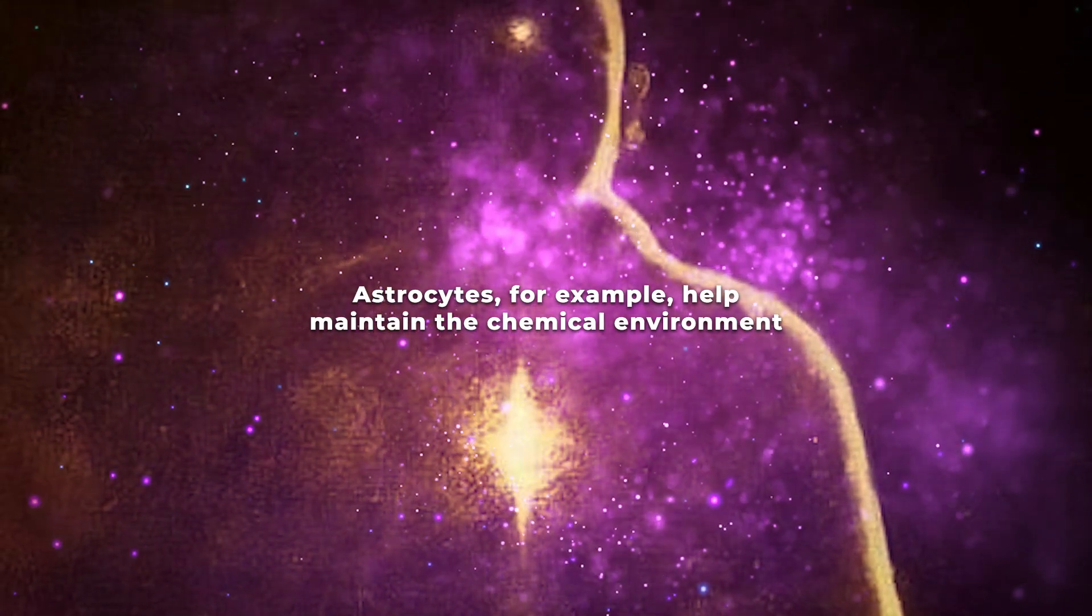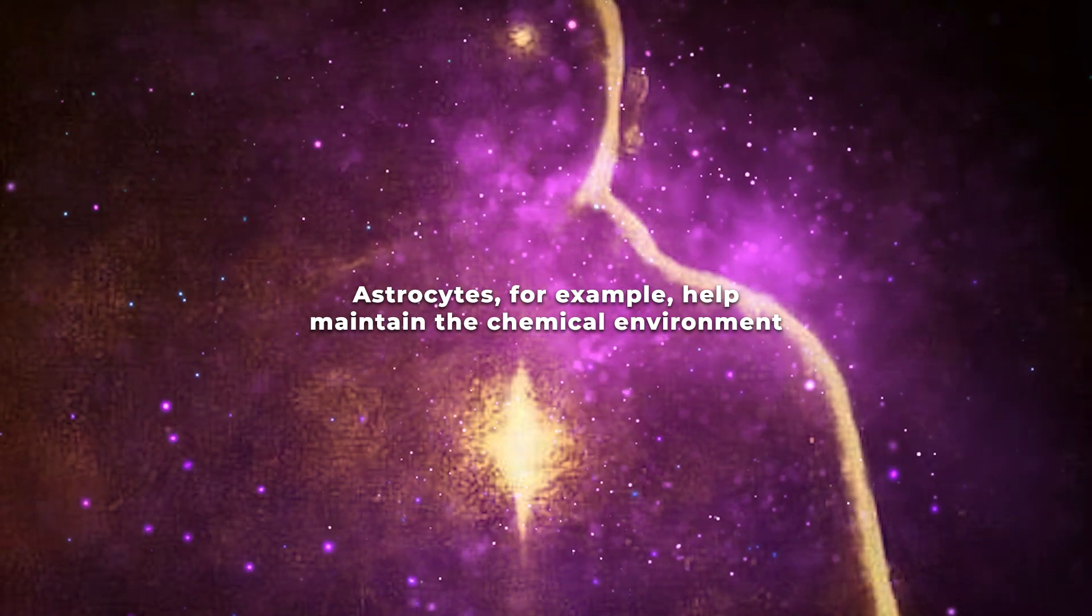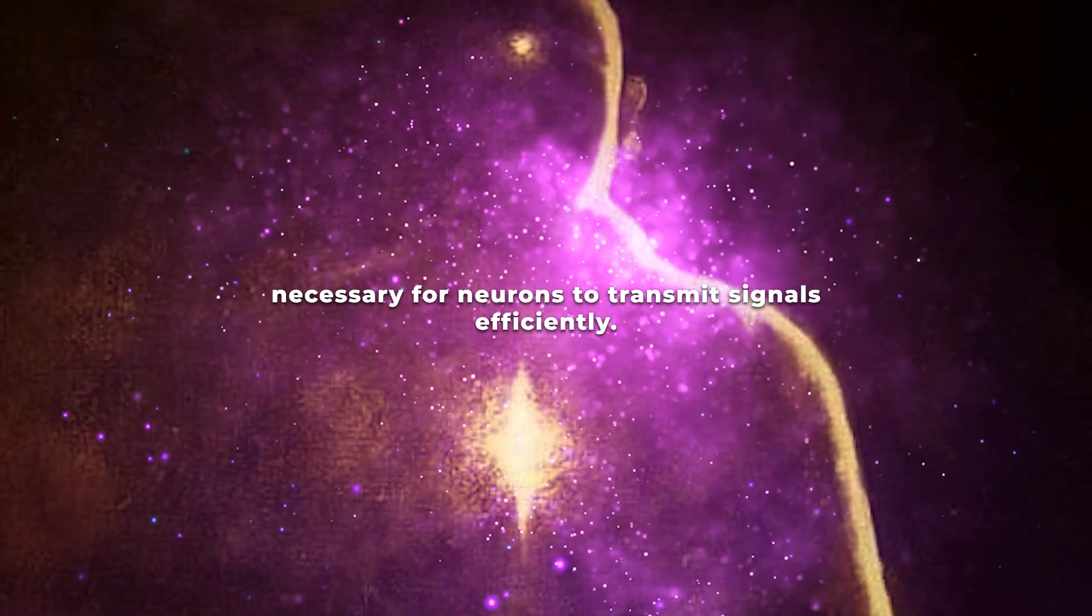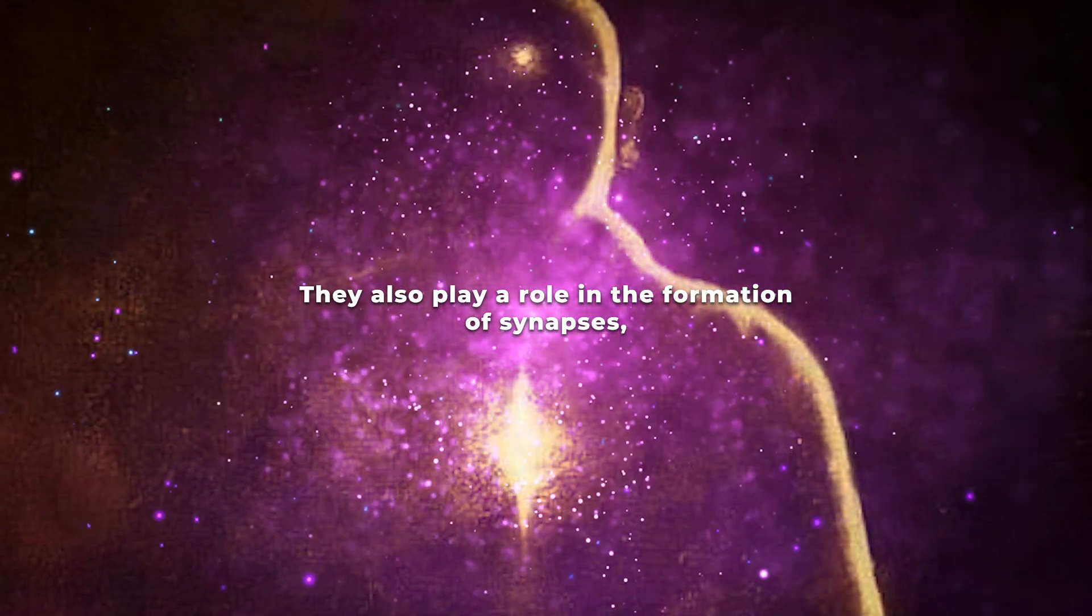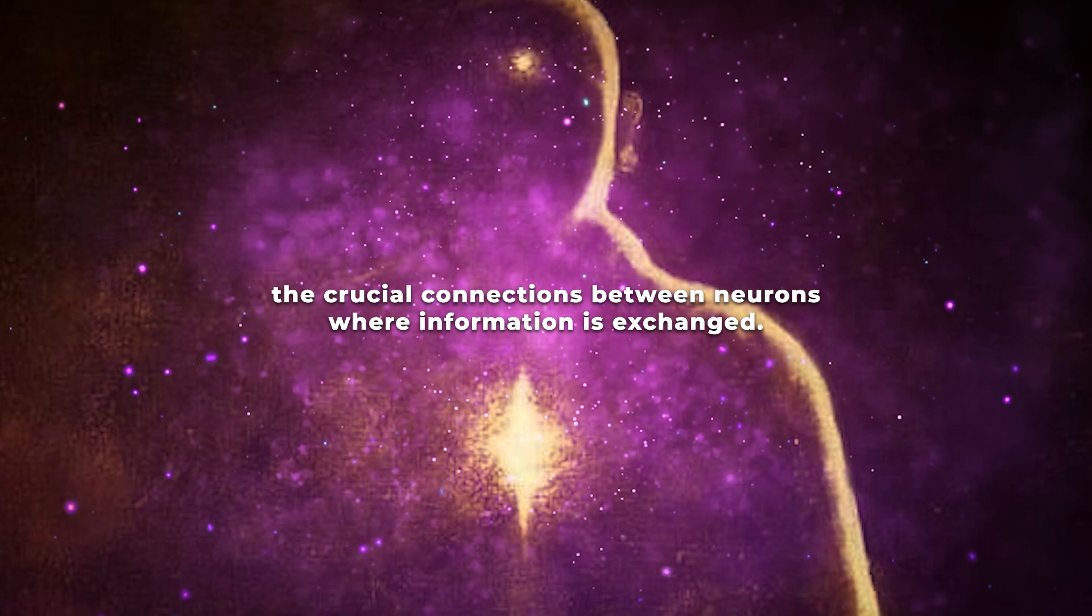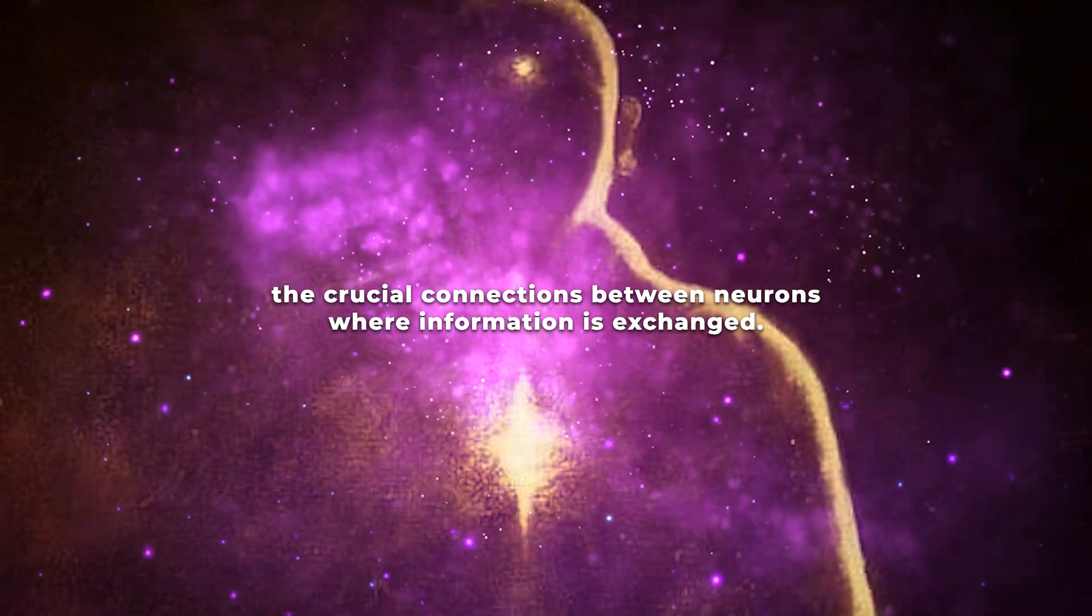Astrocytes, for example, help maintain the chemical environment necessary for neurons to transmit signals efficiently. They also play a role in the formation of synapses, the crucial connections between neurons where information is exchanged.